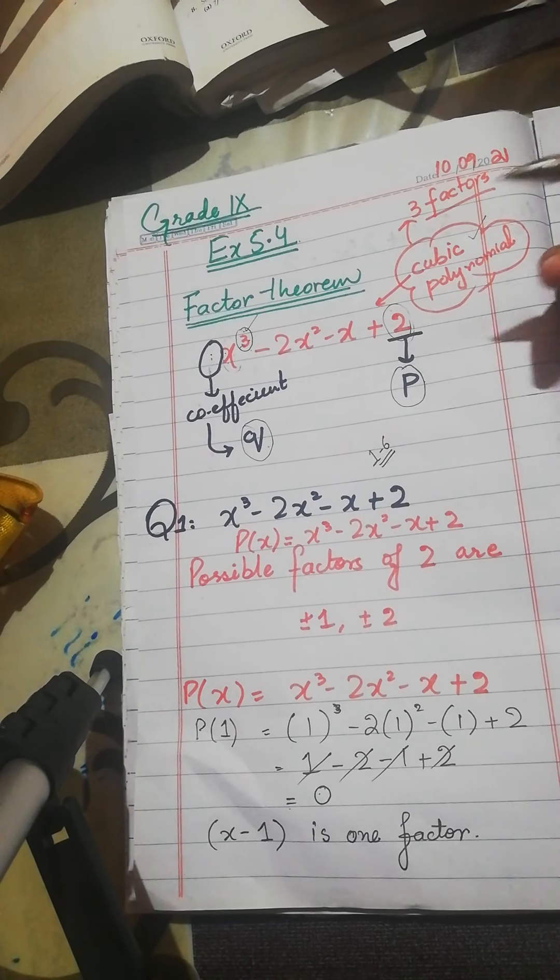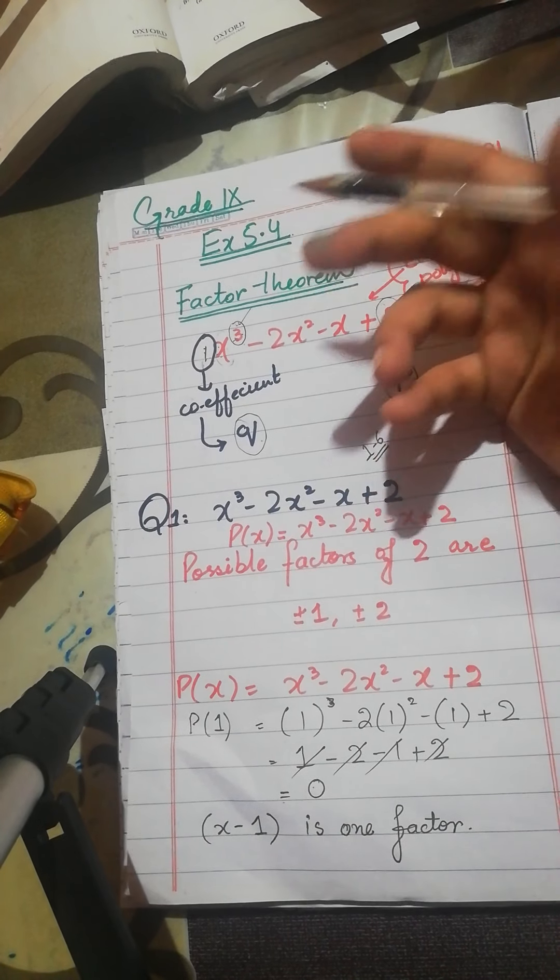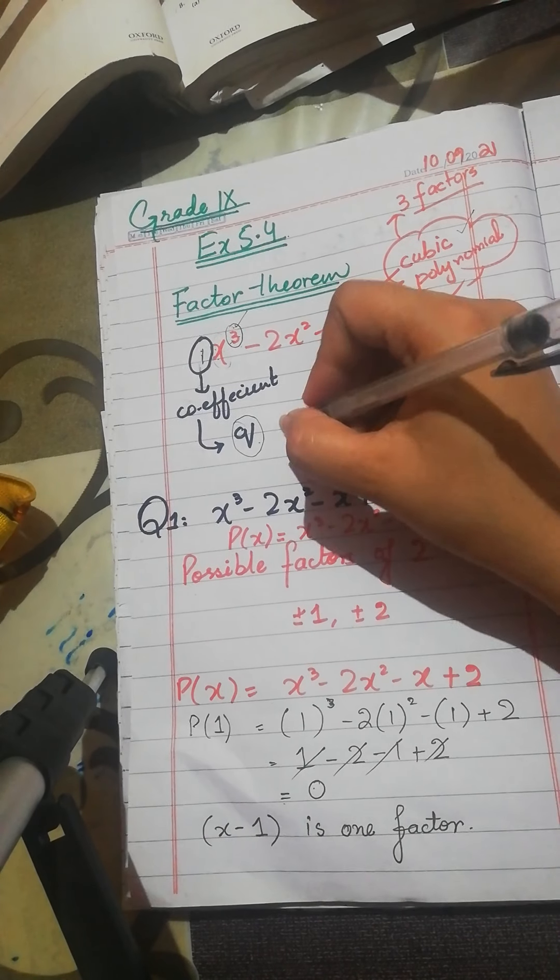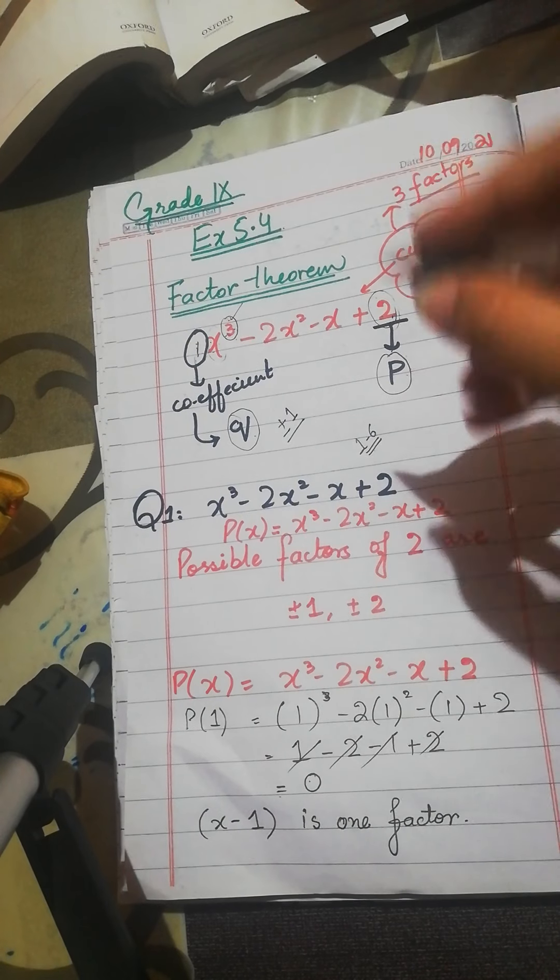Here q is basically 1. It means that 1 is only in our table. What is the factor of 1? It is plus or minus 1. If we talk about q, it is p. It is 2. There are 2 factors.